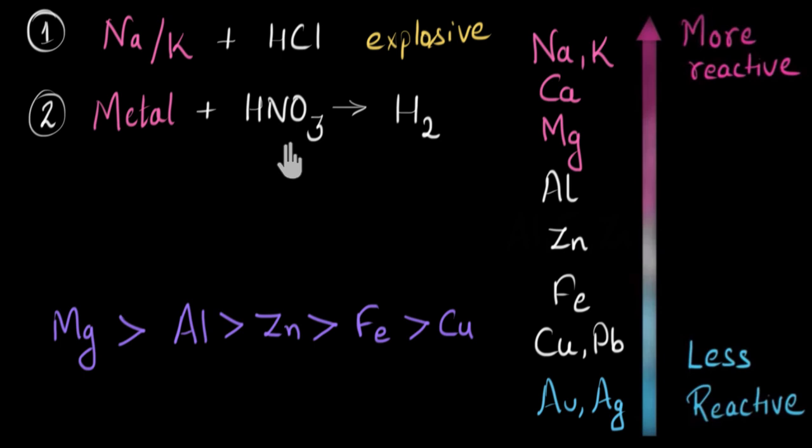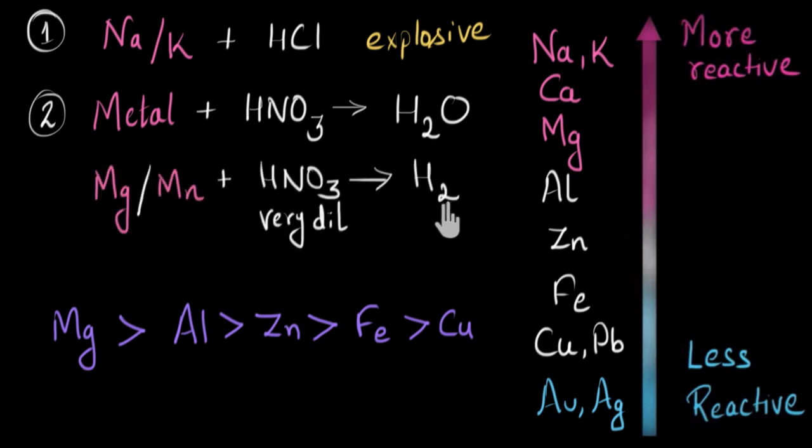So here in this case, nitric acid oxidizes the hydrogen being produced, adds oxygen to it. And finally, we get water instead of hydrogen. Only magnesium and manganese are the two metals that can react with a very dilute form of HNO₃ to give hydrogen gas.